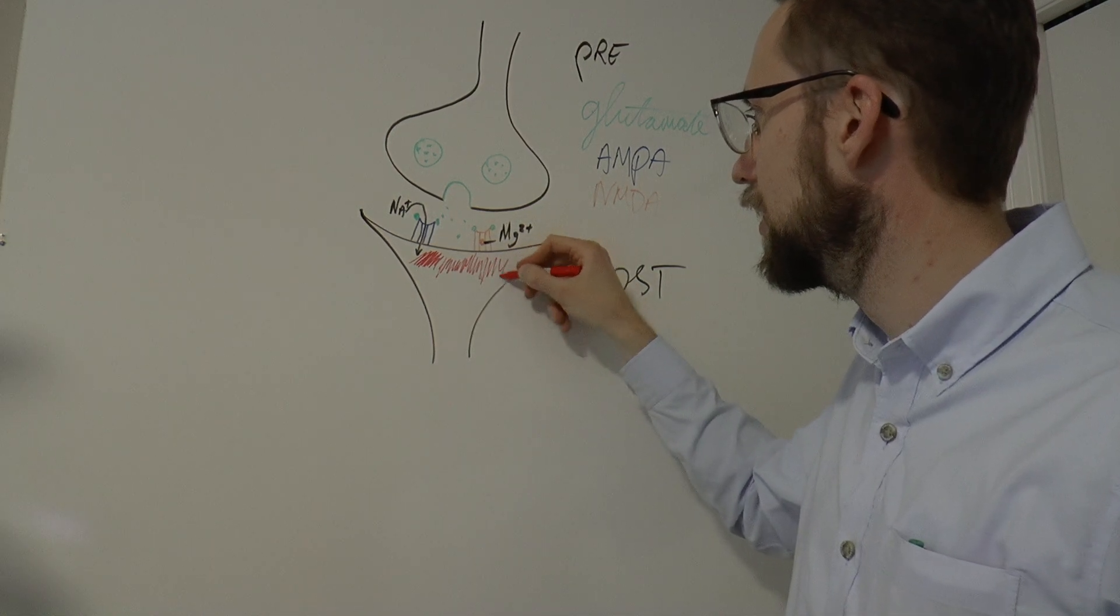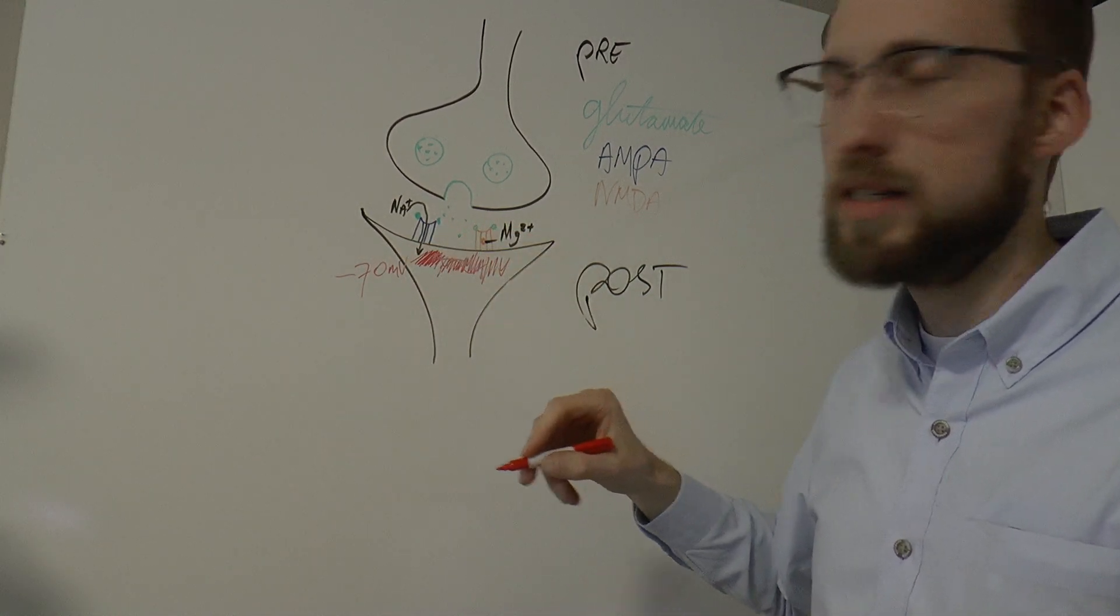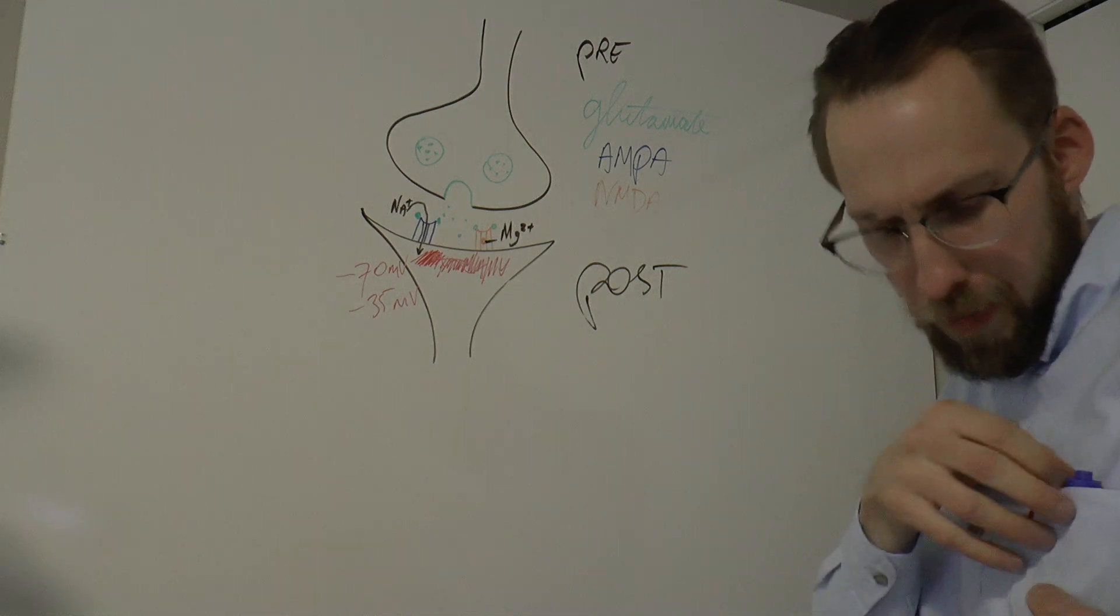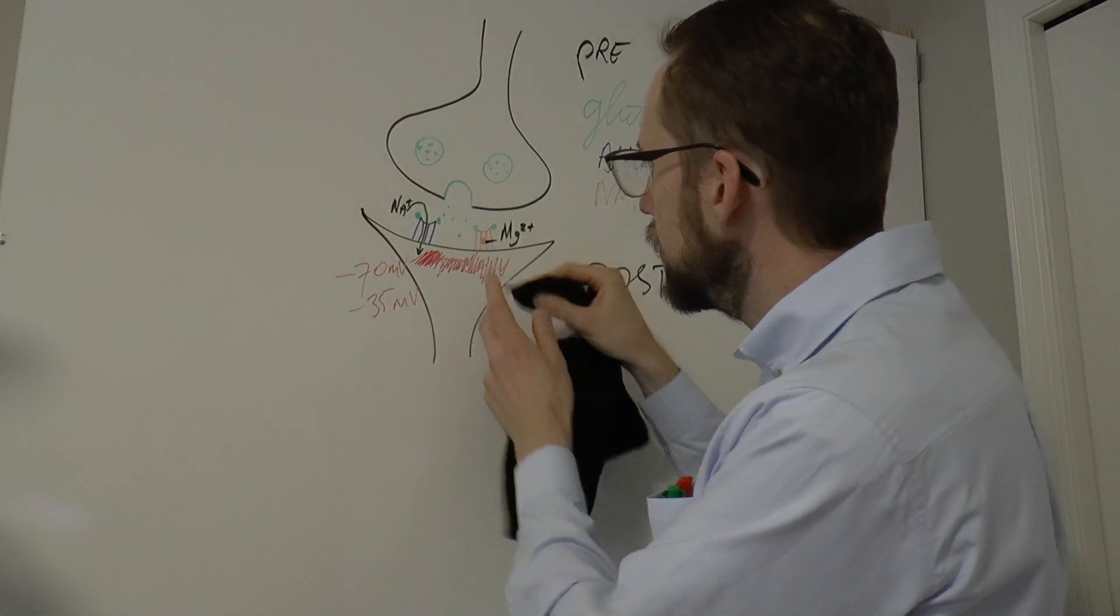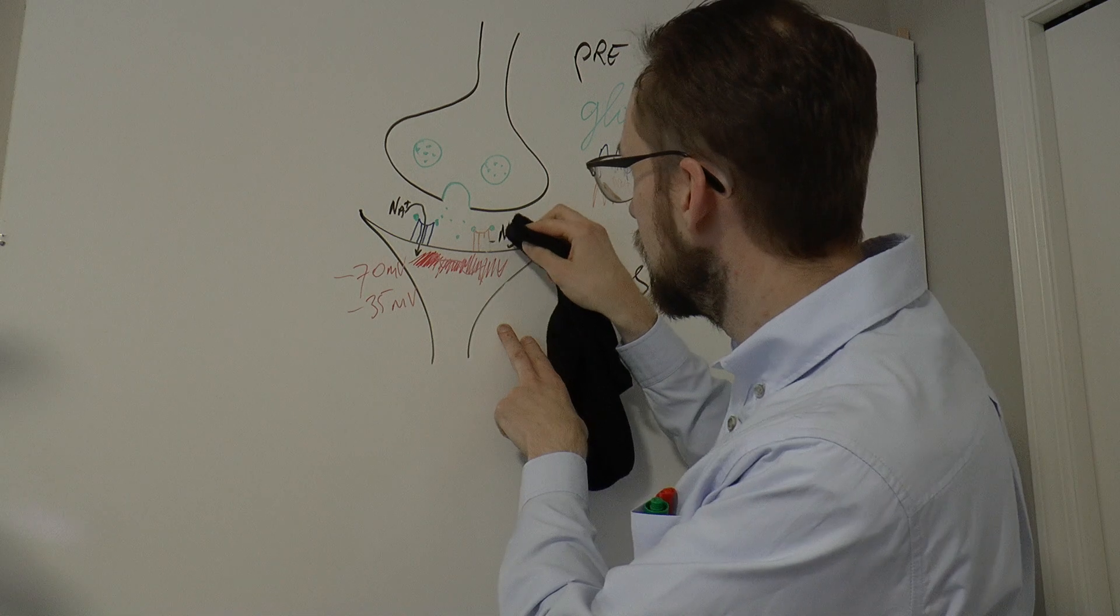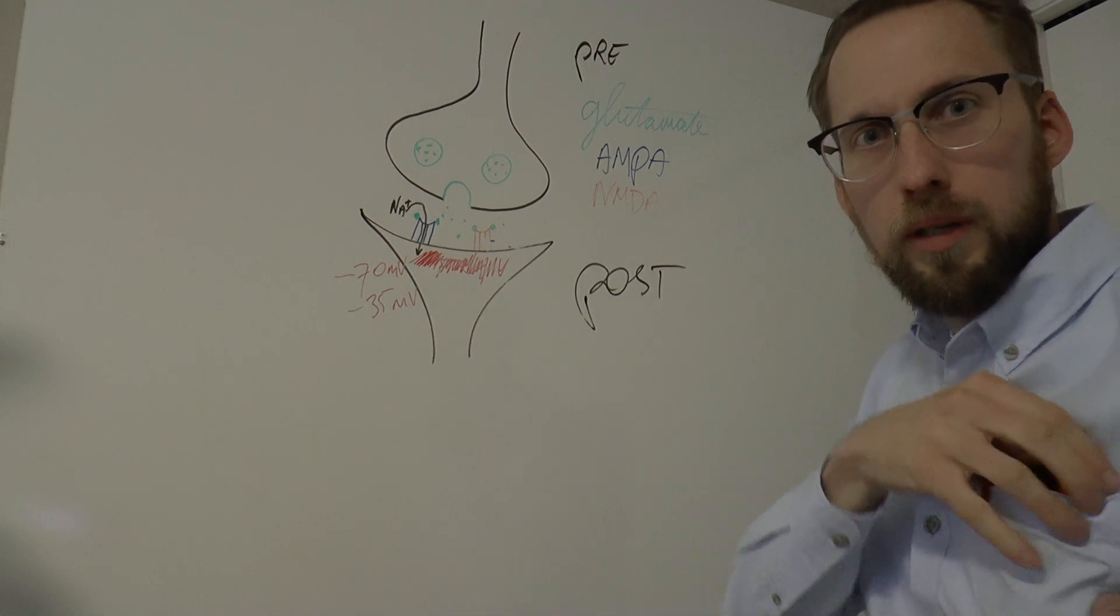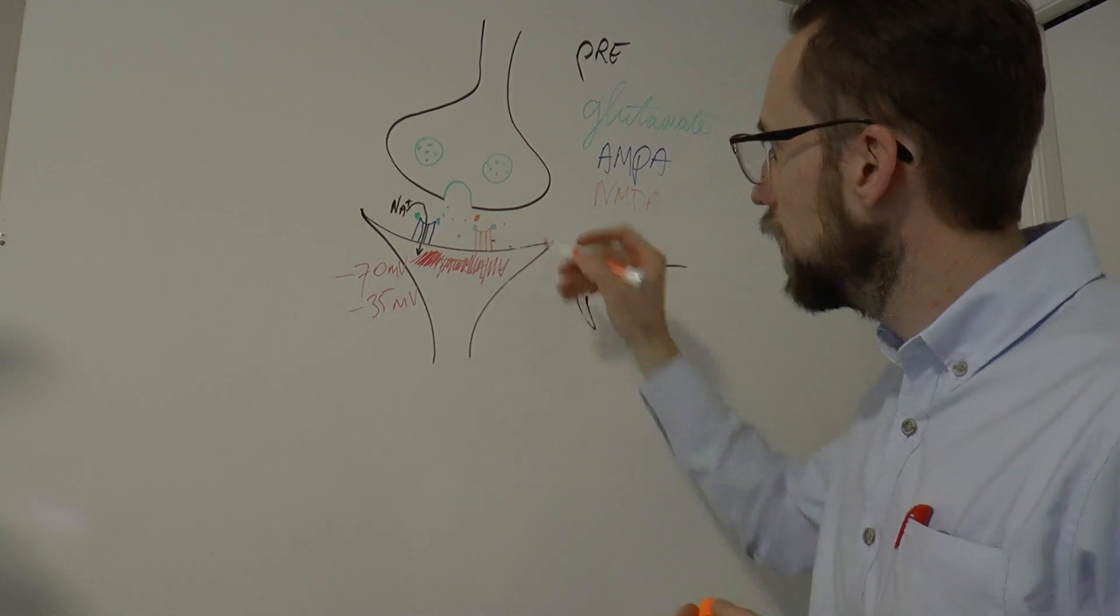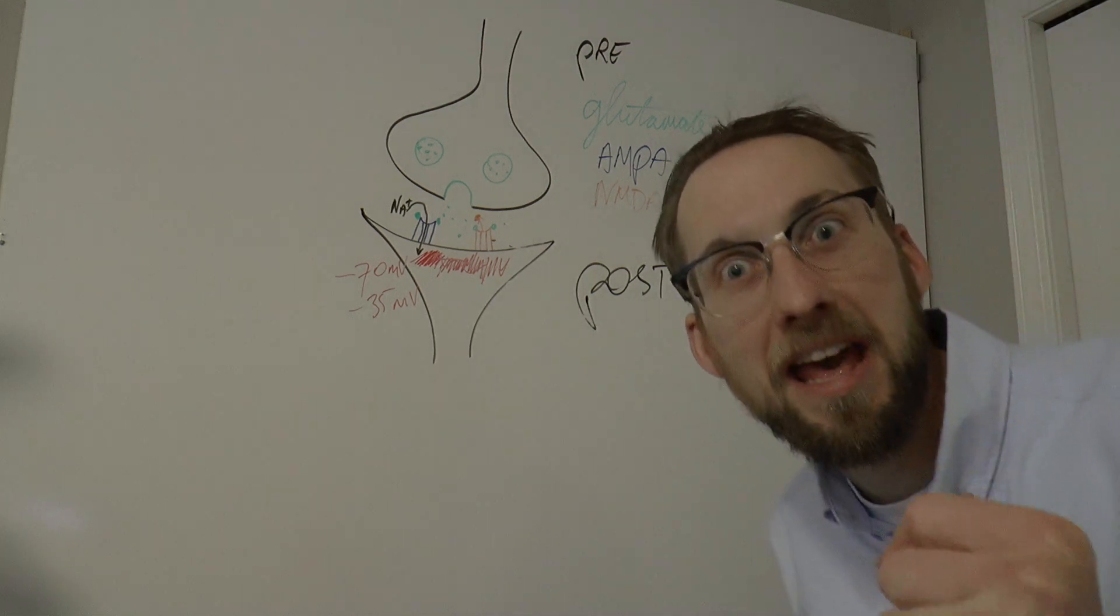I'm just symbolizing this with this redness. It's getting very depolarized. Where is it going? From about minus 70 millivolts, that's at rest, to about minus 35 millivolts. And at minus 35 millivolts, magic happens. What kind of magic? The plug is dislodged. This magnesium plug, I'm going to be very careful here. I'm actually erasing everything but the plug. I'm going to have to redraw a little bit there but that's okay. Here we have our NMDA receptor and that magnesium plug is out, pops out.